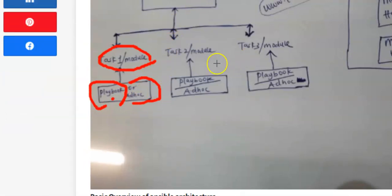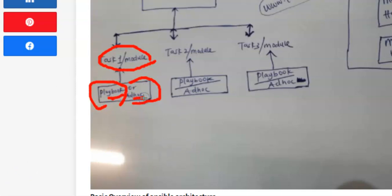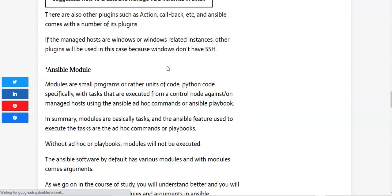The Ansible playbook is a feature in Ansible that contains units of scripts with instructions and tasks. These scripts are simple files written in YAML. As we go on in this course you will understand how to use basic YAML syntax when creating playbooks. Ad hoc, from the phrase 'ad hoc,' refers to simple basic Ansible commands used to execute Ansible tasks — so you either use a playbook or an ad hoc command to execute tasks.